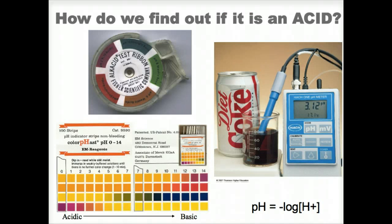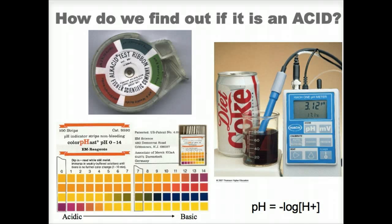The pH of a solution is a measure of the concentration of the hydrogen ions present in that solution. When we measure pH, we are measuring the acidity of a solution. pH is measured on a log-based scale and can be written with the mathematical statement: pH equals the negative log of the hydrogen ion concentration.